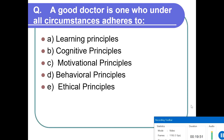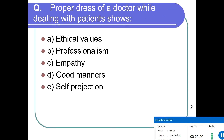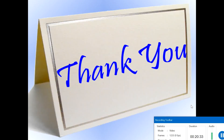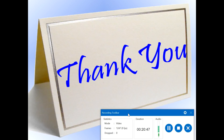Be respectful and trustworthy with all other persons. At the end, this is what we discussed — how you can be professional and how we can assess professionalism. Here is an MCQ: A good doctor is one who under all circumstances adheres to — (1) learning principle, (2) cognitive principle, (3) motivational, behavioral and ethical principle. The answer is ethical principles. Another MCQ: Proper dress of a doctor while dealing with a patient shows — the answer is professionalism. This is all about how you can develop and assess professionalism. Hope you liked the lecture — please like and subscribe. Thank you.